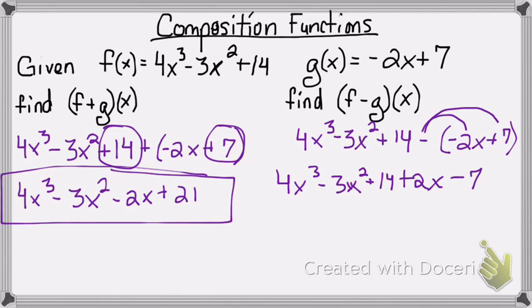So my like terms are, well, 4x cubed, there aren't any like terms with that. And then negative 3x squared, there aren't any like terms with that.